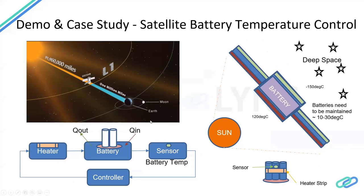Now let me take you into a different space — literally. The next example I'm showing is a satellite in space, taken from NASA. A satellite is hovering between the sun and the earth. I want to show how we do controls for a battery sitting on that satellite. On one side, the satellite is fully exposed to the sun, so the battery temperature on that end is very high. On the other side, it faces the earth and deep space, which is on the colder end. So the battery sees extreme hot temperatures on one side and extreme cold on the other.